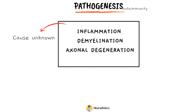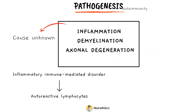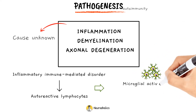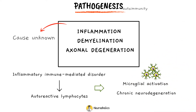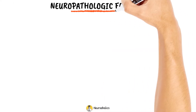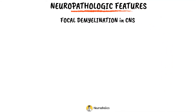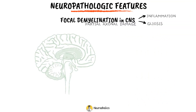The most widely accepted theory is that MS begins as an inflammatory immune-mediated disorder characterized by autoreactive lymphocytes. Later, the disease is dominated by microglial activation and chronic neurodegeneration. The characteristic neuropathologic feature of MS is the presence of focal demyelinated plaques within the central nervous system, accompanied by variable degrees of inflammation and gliosis, with partial preservation of axons.